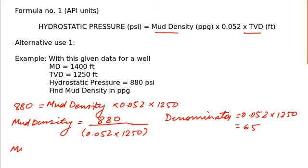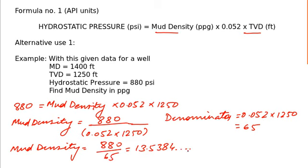Denominator is 0.052 multiplied by 1250, which will give you 65. Then mud density will be 880 divided by 65, which will give you 13.538 for something. For now, simply take first two decimal places and leave the other decimal places. More on this in later videos on how to round off. For now, just take two decimal places. So your answer is 13.53 ppg.